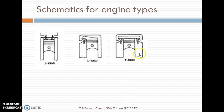This is the T-Head engine. Here also we can see both valves are on either side of the engine. So the combustion space is a little bit wider, meaning the flame has to travel a larger distance for completing the combustion.